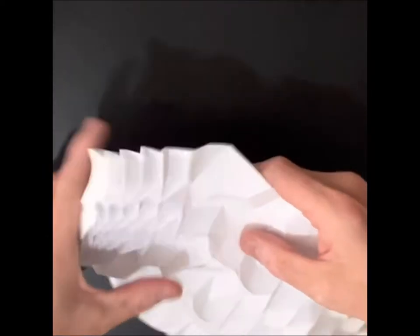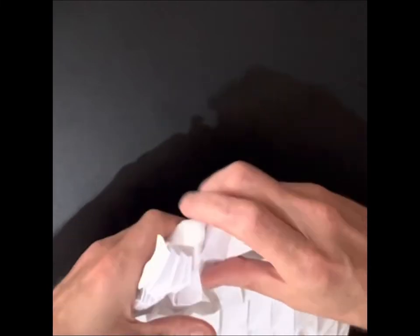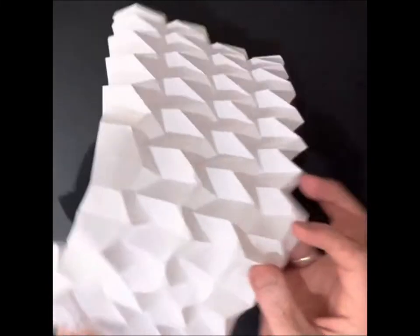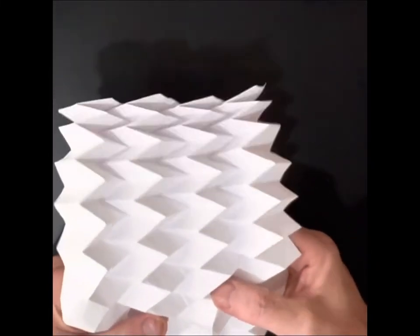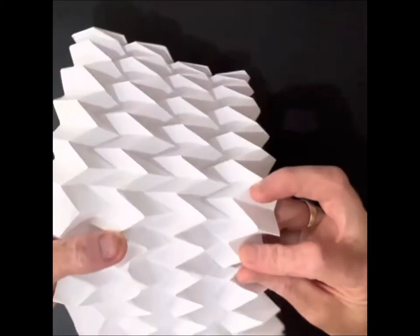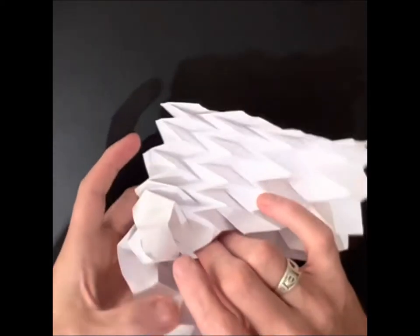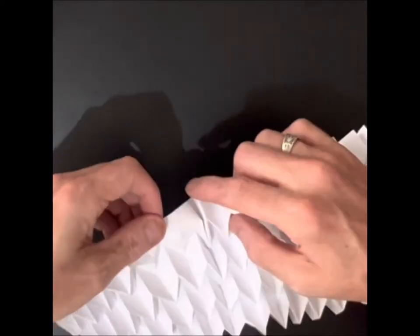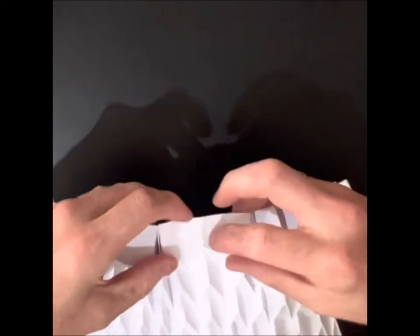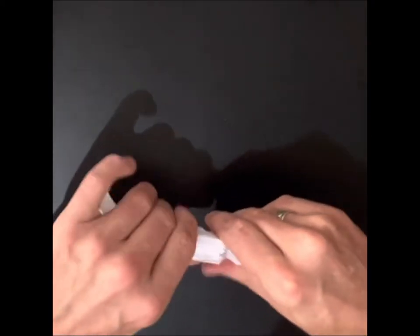I've used a glue stick there. I like glue sticks because they give me a little bit of give towards the end here, towards the end of the fold. And there will definitely be a little bit of give in this one because the folds aren't perfect.